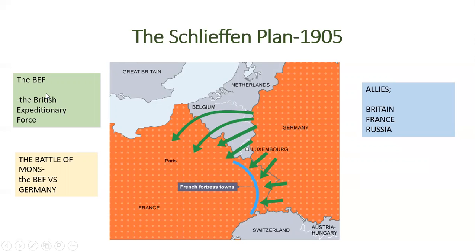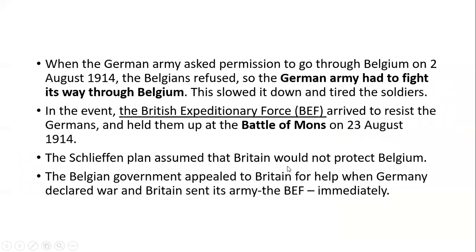The allies sent their BEF, the British Expeditionary Force. When Germany asked permission to go to Belgium on 2nd August 1914, Belgium refused, so the German army had to fight its way into Belgium. The Schlieffen Plan had assumed that Britain would not help Belgium, but they were wrong.